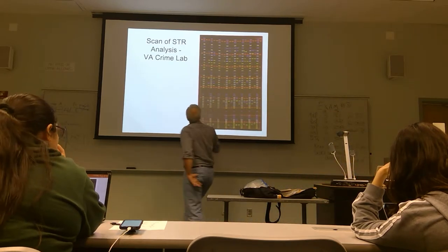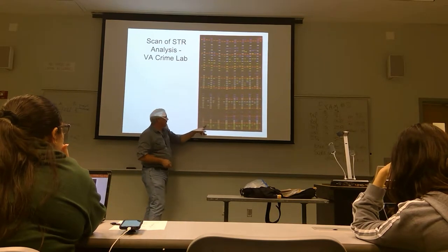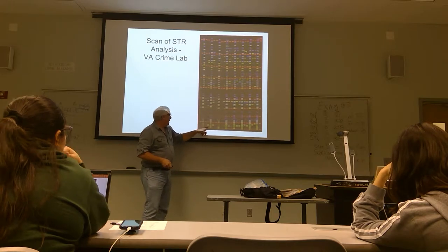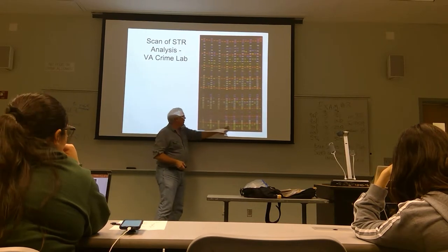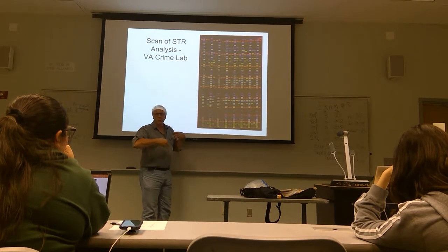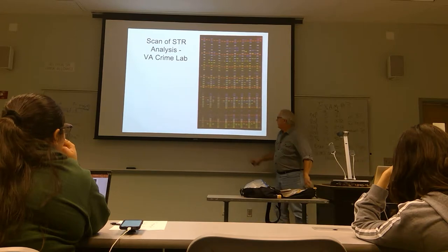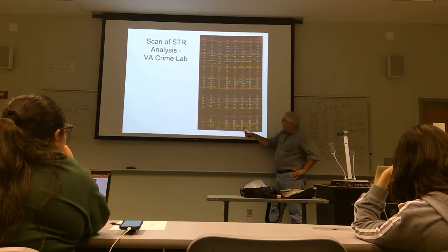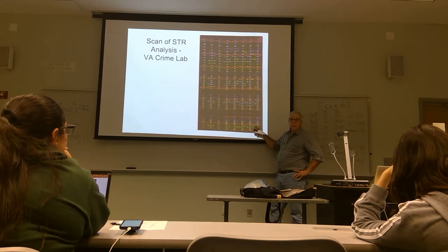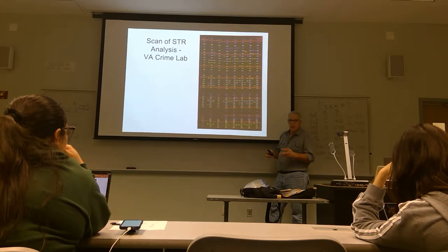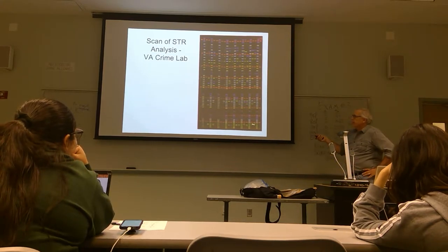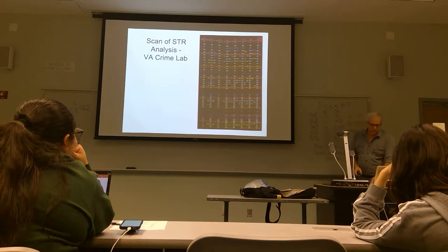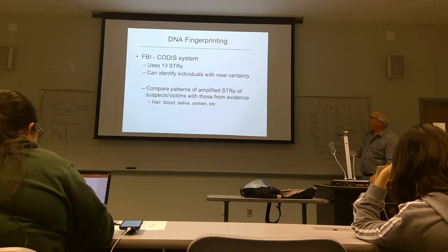Looking at the second sample lane as evidence from the crime scene, and looking across at all other lanes as suspects — they haven't ruled out many people because most individuals match this particular STR. Here's one that's different, this one's the same, this one's different. One STR isn't going to cut it — you can't rule everybody out. That's why they run 12 different ones plus one for sex. In too many cases a single allele doesn't distinguish between individuals, but if you get enough alleles it does. Using all 13, you can identify people with near certainty.